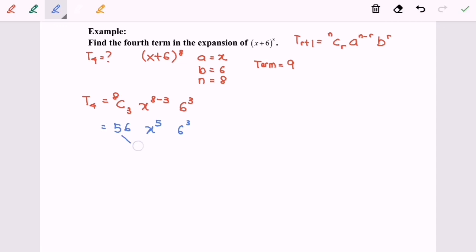So we have to multiply these two terms and we will have 12096x^5.